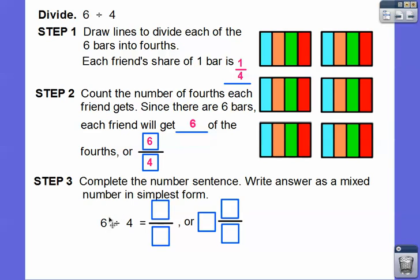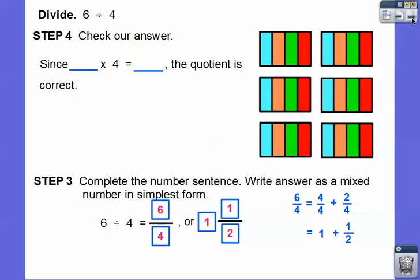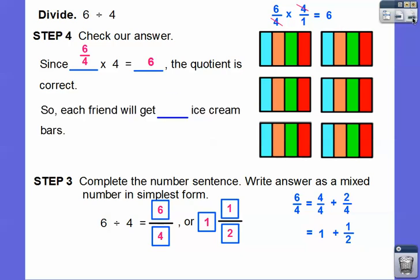Complete the number sentence and write the answer as a mixed number in simplest form. Six divided by four is six over four. Six over four is the same as four over four plus two over four. Four over four is one, and two over four is one-half. So it's one and a half. Let's check: six-fourths times four equals six — the fours cancel. Each friend is going to get one and a half ice cream bars.